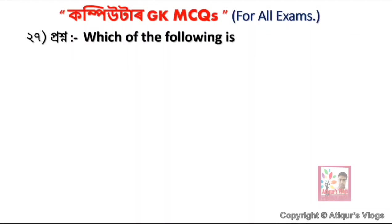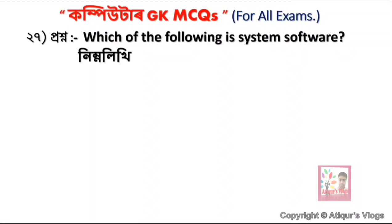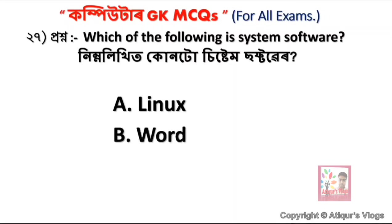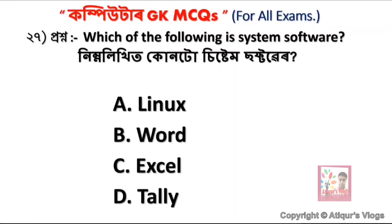Which of the following is system software? Option A is Linux, option B is Word, option C is Excel, and option D is Tele. The correct answer is Linux — Linux is system software and an operating system.